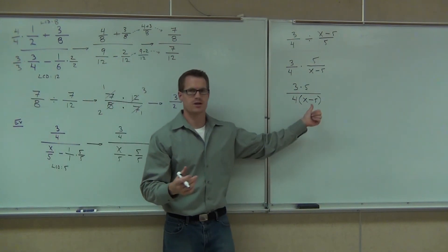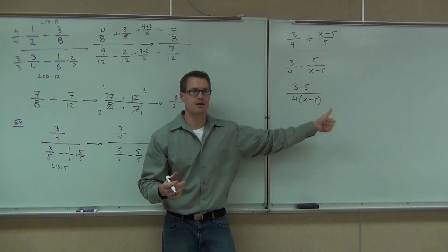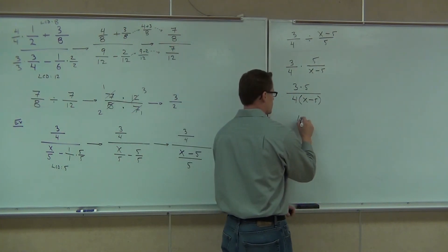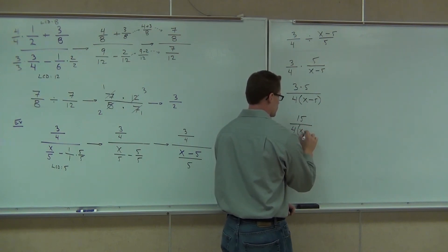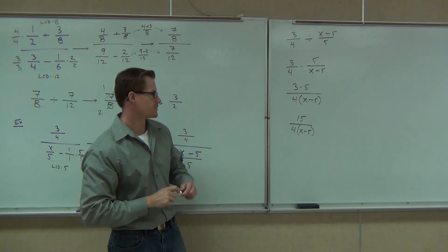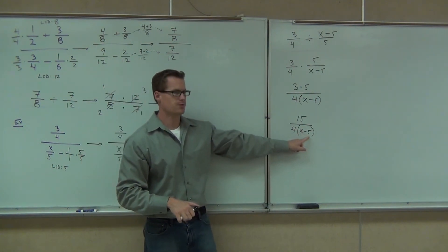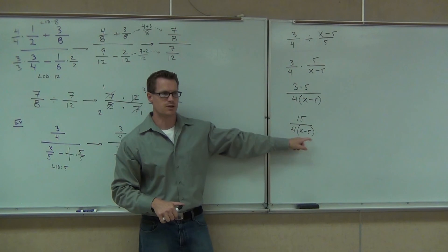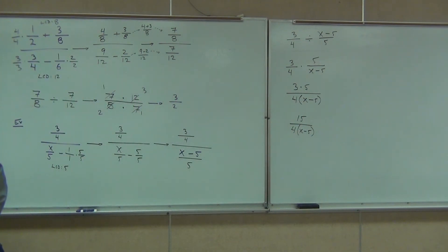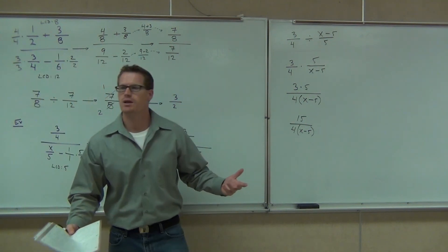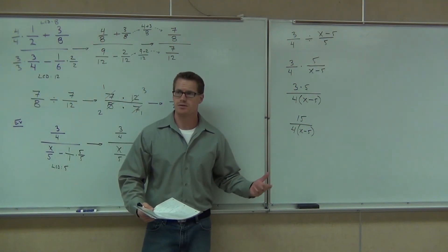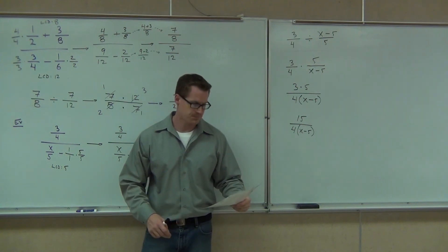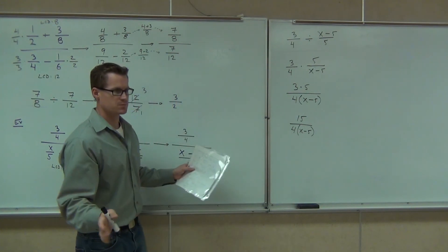So the result is 15 over 4(x minus 5). Can you simplify the 15 with the 5? No — the 5 is being subtracted, so you cannot cancel it. You're done. You don't have to distribute; you can leave it in factored form. It's your choice.